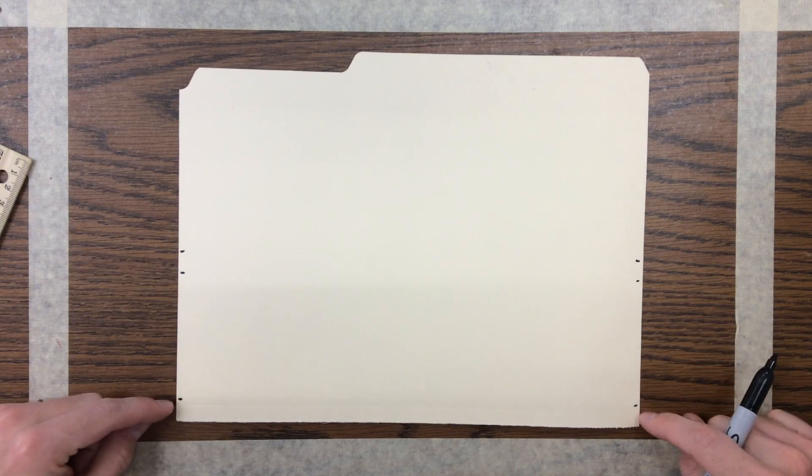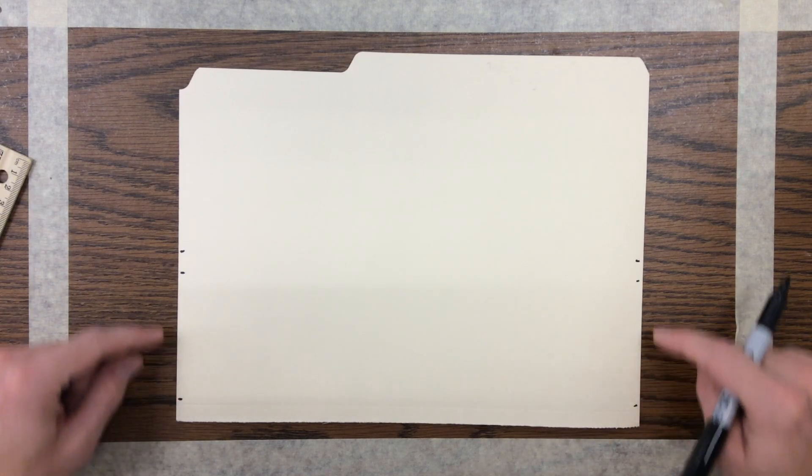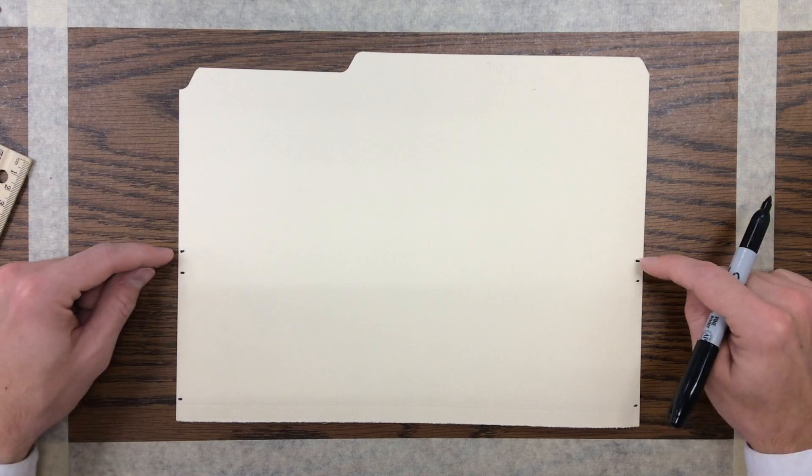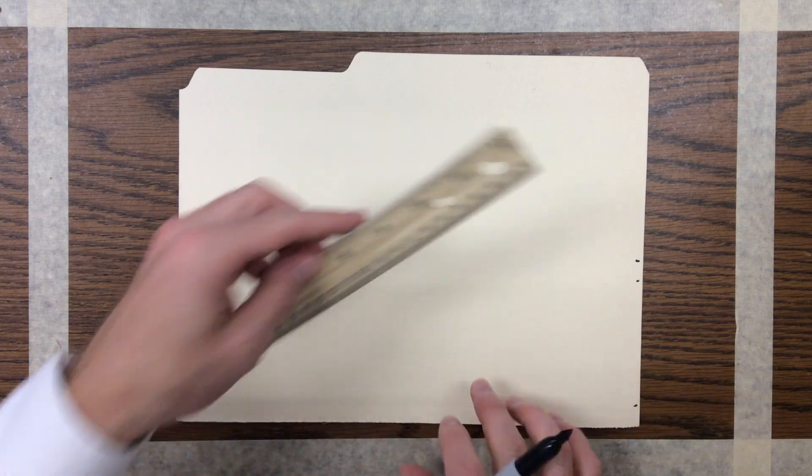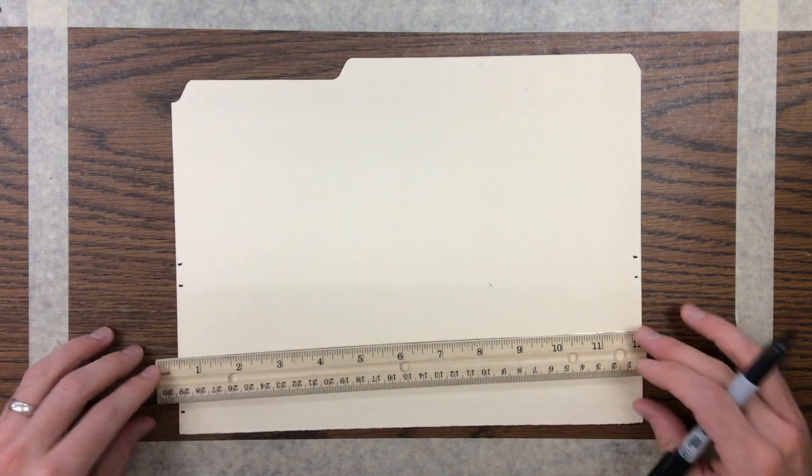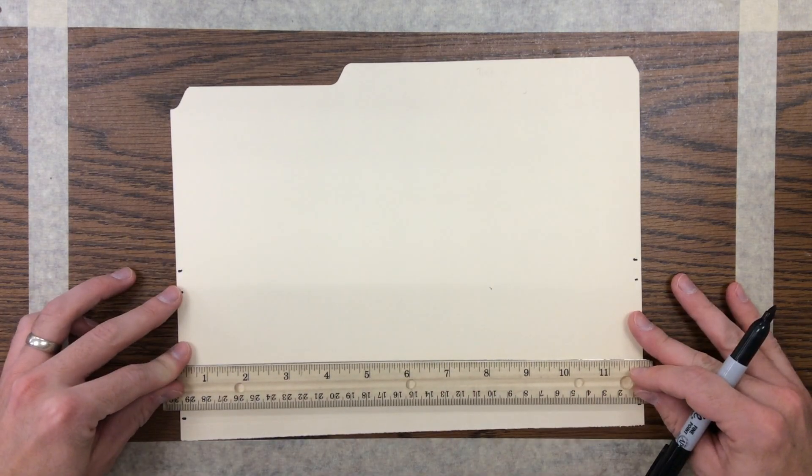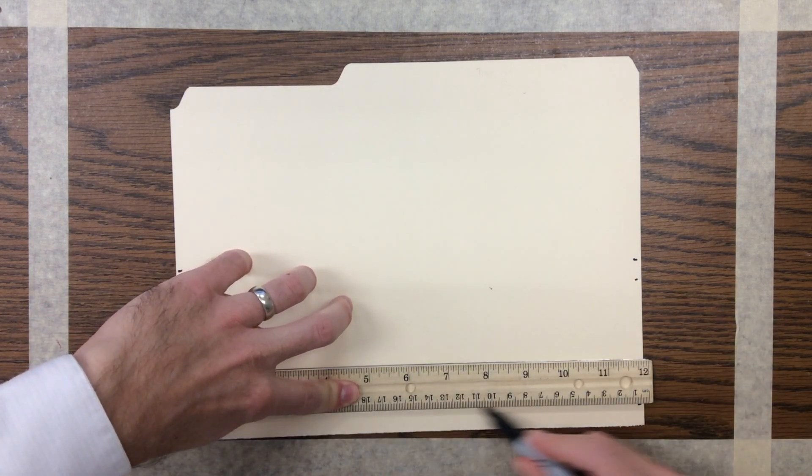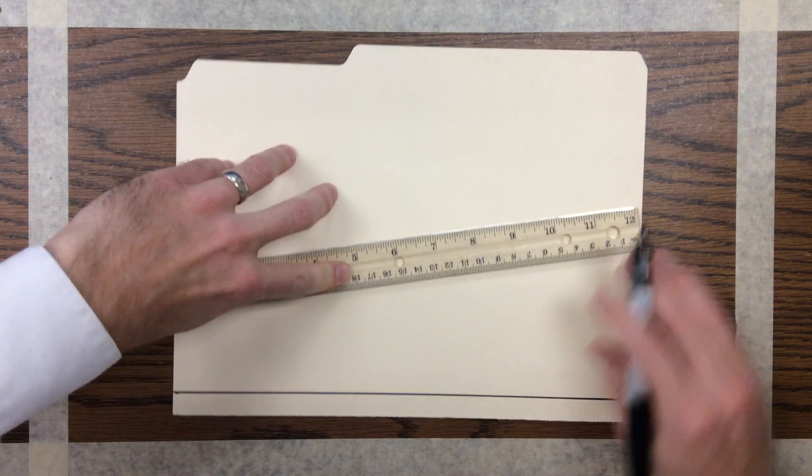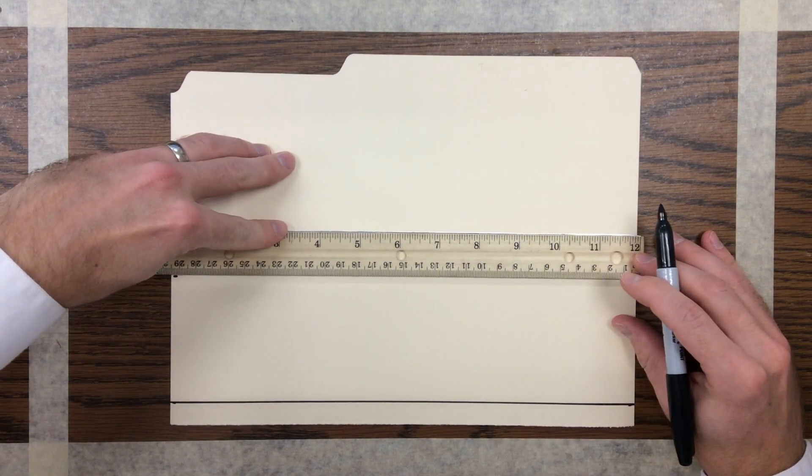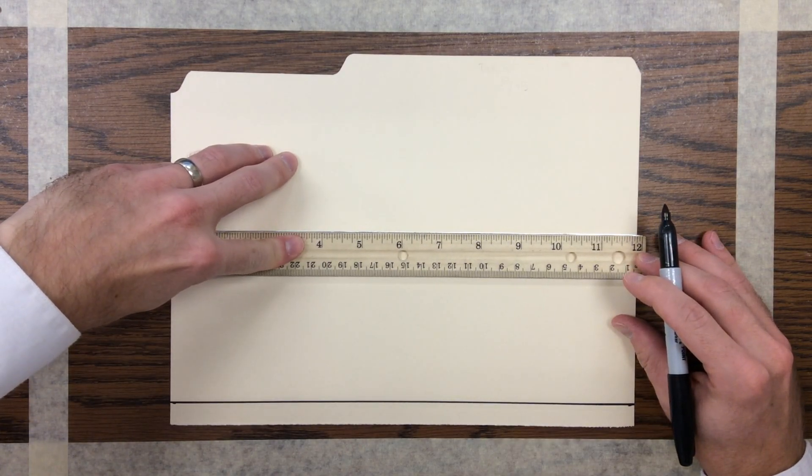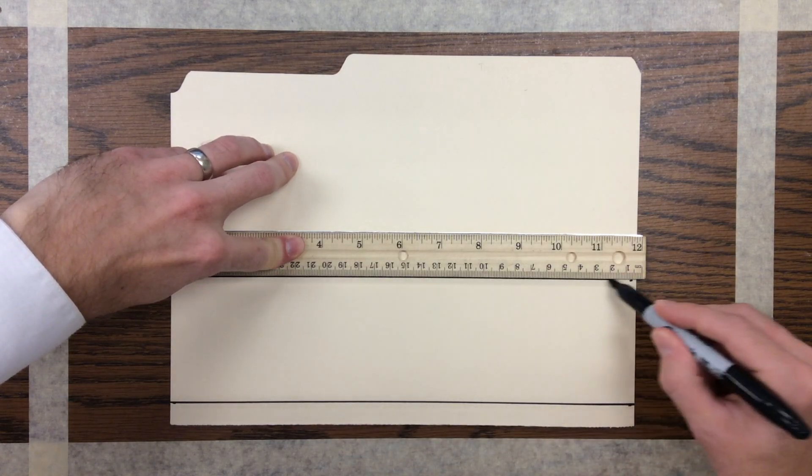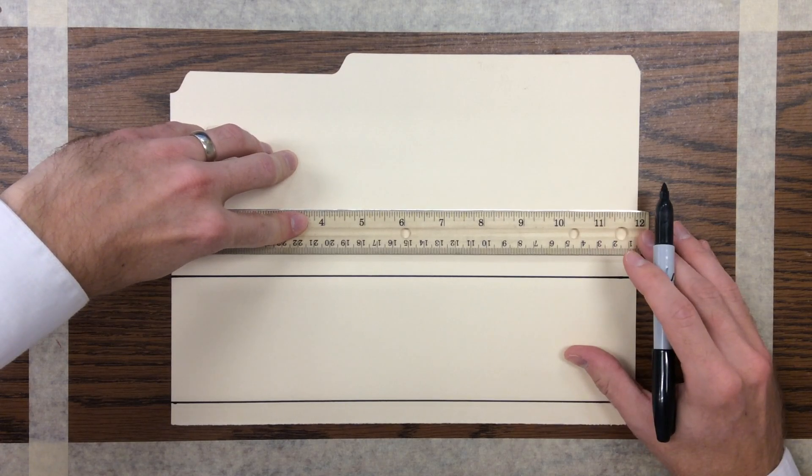Again, these dots are a half inch from the bottom, these dots are three and a half inches from the bottom, and these dots are four inches from the bottom. From there, I will connect those dots using my ruler. Again, very important that you have straight and parallel lines. At this point, all of our lines are parallel to the bottom edge of this folder.